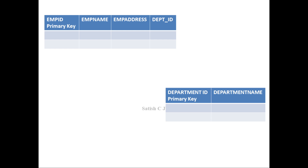Let us take a look at an example for a foreign key. Here I have two tables. One is a department table with two columns: department ID, which is the primary key, and department name. The other table is an employee table with four columns: employee ID (the primary key), employee name, employee address, and department ID. In the department table, 121 is the department ID for 'Scope' and 122 is the department ID for 'SBSD'.